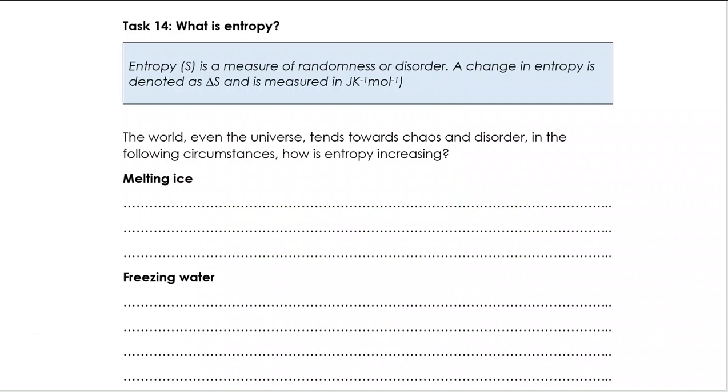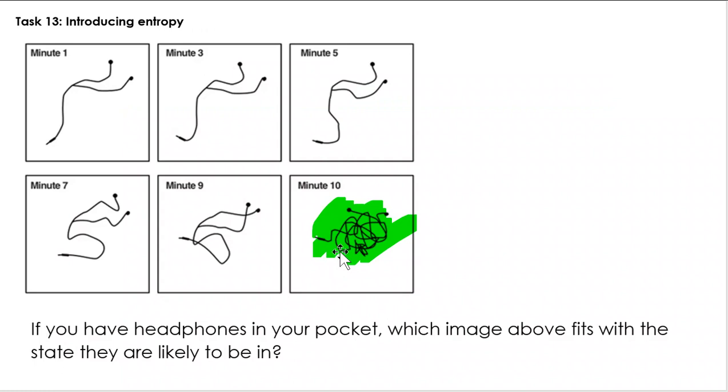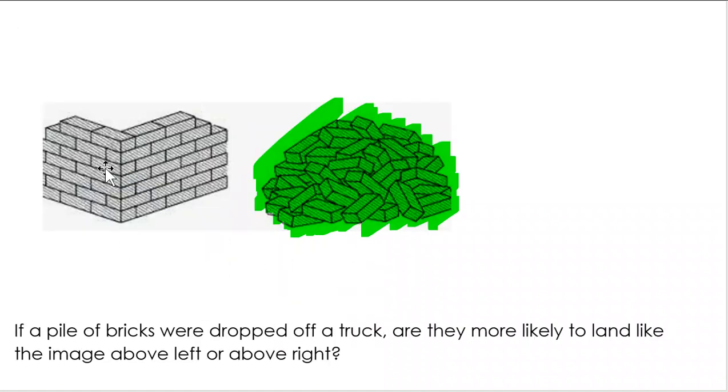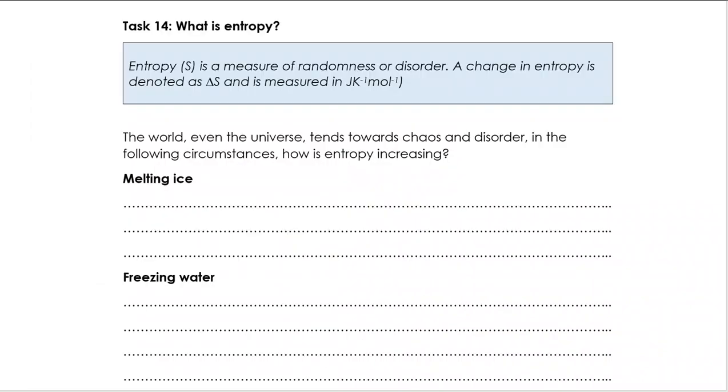First of all, just have a think about headphones here. They've got wires on them - which of these is what you're most likely to see if you've had them in your pocket for a while? The reality is it's going to be what we see here at minute 10, they're tangled up, they're tied up in knots. So this is our introduction to entropy. Entropy is a measure of randomness or disorder, and the change in entropy is denoted as delta S and is measured in joules per Kelvin per mole.